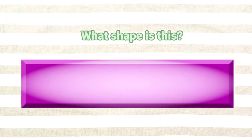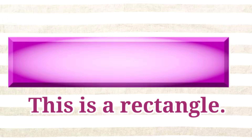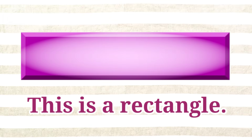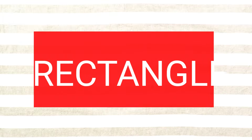What shape is this? This is a rectangle. Great job! You are correct! This is a rectangle. A rectangle has four sides. Two sides are long and two sides are short. Rectangle.